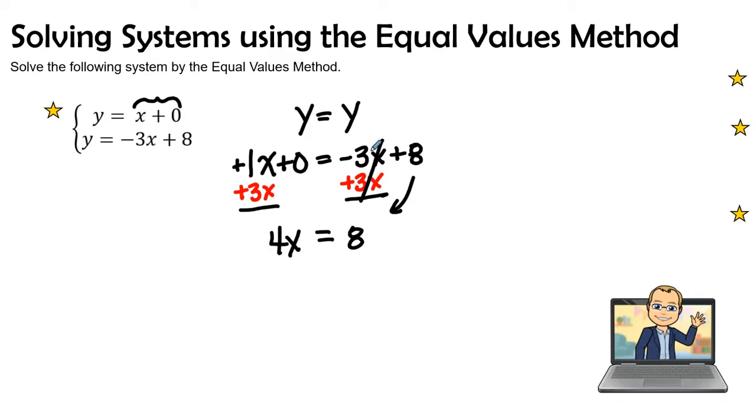The negative 3x plus 3x is equal to 0, and so that also gets dropped off as well. When I go ahead and divide both sides by the coefficient, we are going to have an x value that is going to equal 2. Now we are getting ready. We have our x value.